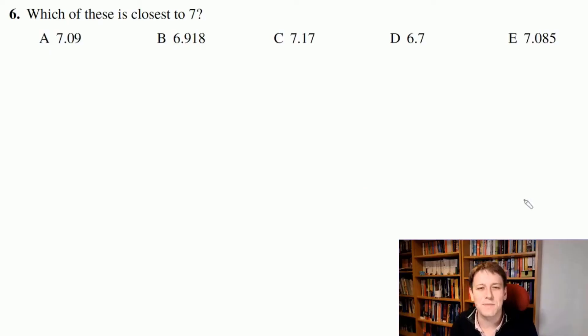To get to expert level in the Maths Challenge, we can sometimes recognize that we can make questions easier for ourselves if we rephrase them. This question is clearly equivalent to saying which of these is closest to 7,000. This one would be 7,090, this one would be 6,918, 7,170, 6,700, 7,985. Then we don't have to worry at all about making mistakes with fractions.